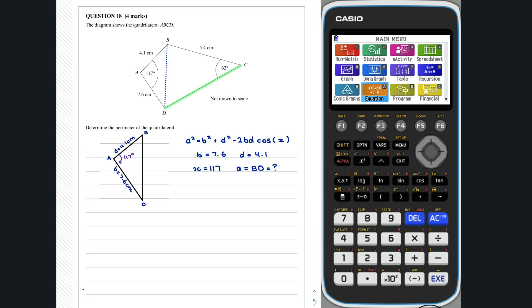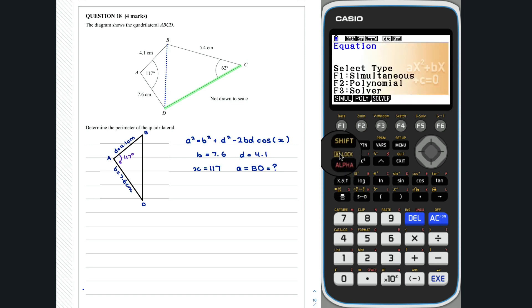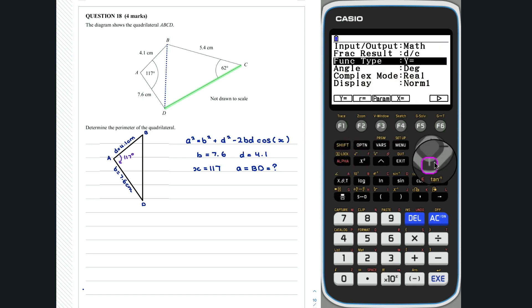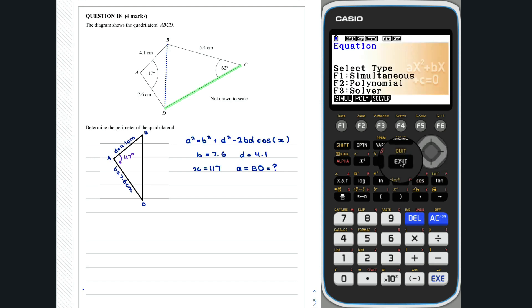As we are working in degrees, we need to check that our calculator is at 2 degrees, not radians. Using the equation solver, we can work out BD. Recall that the variable we wish to solve for is set to 0 and that we need to check our upper and lower values in the context of the question.